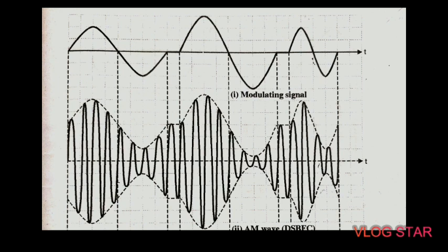In the previous chapter we have seen that when a carrier is amplitude modulated by a single modulating signal, the AM wave consists of three frequencies: the first is carrier frequency FC, second upper sideband FC plus FM, and third lower sideband FC minus FM. The AM signal is therefore also known as double sideband full carrier signal, that is DSB-FC. The carrier signal in the DSB-FC system does not contain any information, and the information is contained in the two sidebands only. But the sidebands are images of each other and hence both contain the same information.